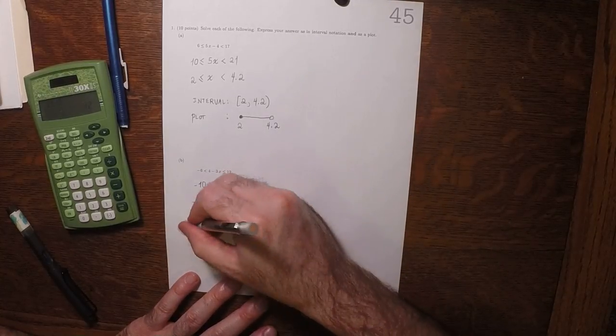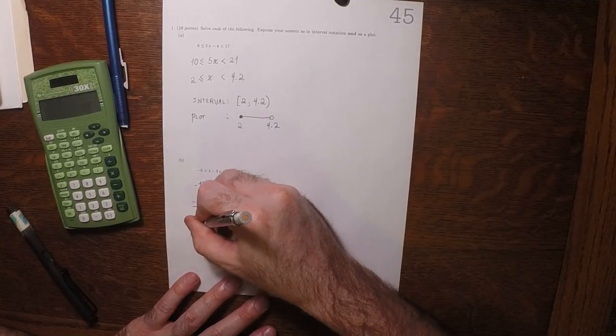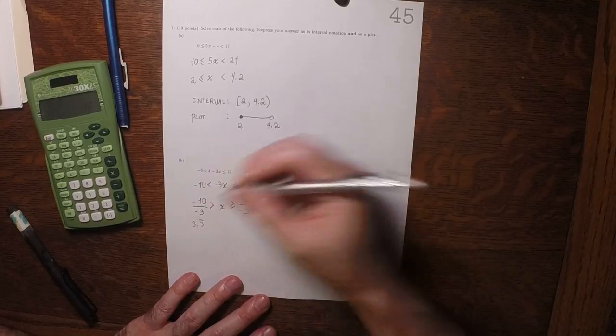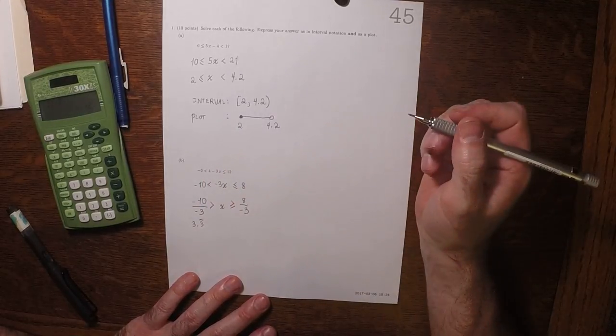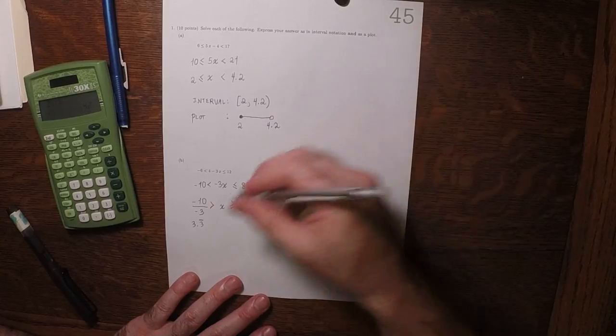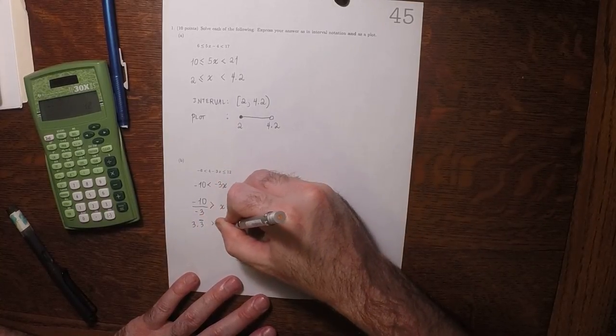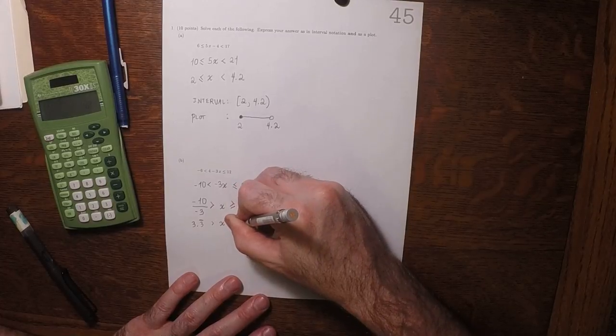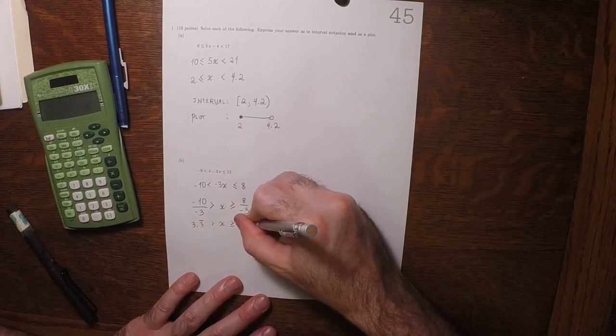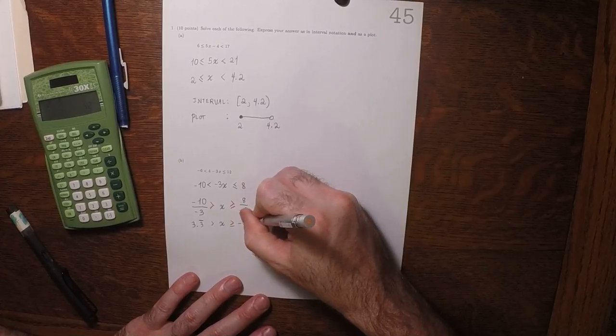So 10 over 3, that's 3.3 repeating. And then 8 over negative 3, that's... So this would be greater than x, and then greater than or equal to negative 2.6 repeating.